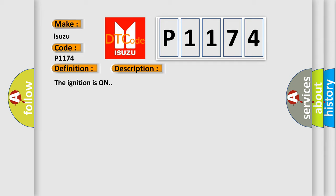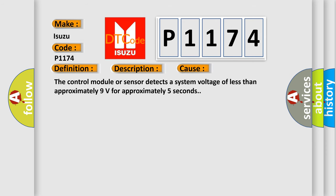The ignition is on. This diagnostic error occurs most often in these cases: The control module or sensor detects a system voltage of less than approximately 9 volts for approximately 5 seconds.